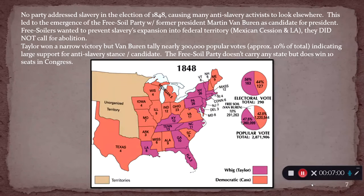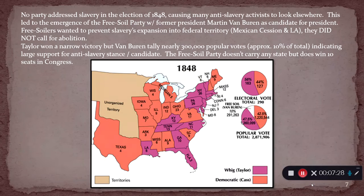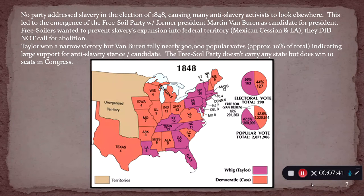Lewis Cass, the Democratic candidate, is from Michigan — a state prohibited from ever having slavery by the Northwest Ordinance. Cass wins free states like Maine, Ohio, Wisconsin, and Indiana, but also wins Mississippi, Alabama, South Carolina, Virginia, and Texas. Much like Taylor wins without saying he wants slavery forever, Cass wins many slave states because he's not saying he wants to get rid of or restrict slavery's expansion. This map is a graphic representation of the fact that nobody is really saying anything about slavery.